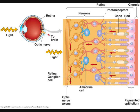Amacrine cells are neurons that run perpendicular to bipolar cells and are located where the bipolar cells synapse with the retinal ganglion cells. Amacrine cells can facilitate or hinder signaling between the photoreceptors and the ganglion cells.